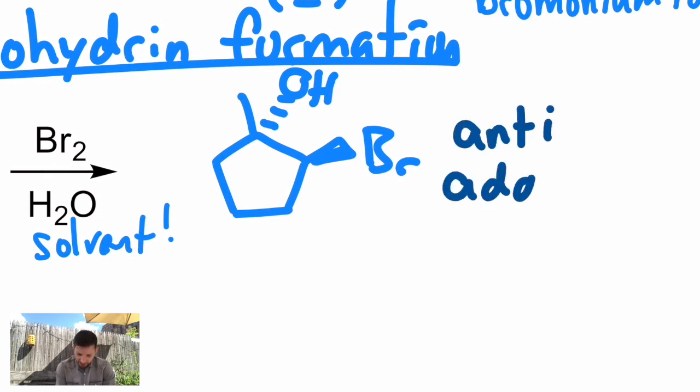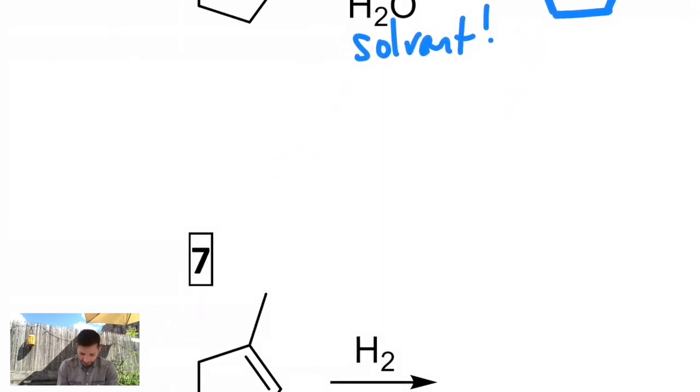This is still anti-addition. Much of this has features similar to the previous example. I'd like you to hit pause and see if you can figure out what the curved arrows would look like for this. Let's see how you did.